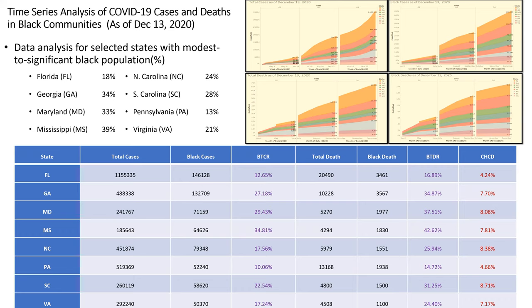A BTCR of 12.65 means that out of every 100 COVID cases, more than 12 were Black. A BTDR of 16.89 means that out of every 100 people who contracted COVID and died, more than 16 were Black. The same pattern appears in Georgia: a BTCR of 27.18 means 27 out of every 100 cases were Black, while the BTDR of 34.87 means more than 34 out of every 100 deaths were Black.